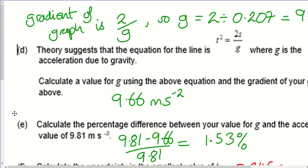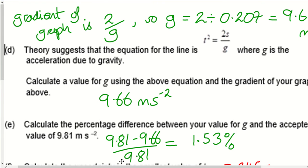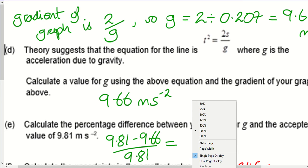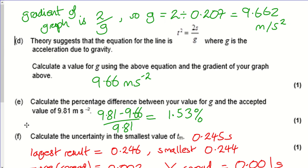The theory comes straight from SUVAT: s = ut + ½at². For a free-fall from rest, rearranging gives t² = 2s/g, so t² is plotted against s. The gradient of that graph equals 2/g.